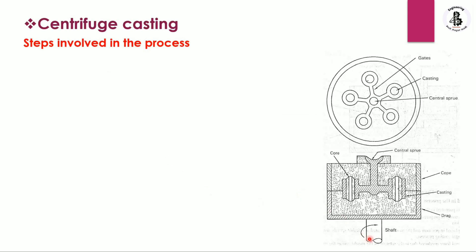The various steps involving the centrifugal casting process: the traditional approach uses a shaft with cope, drag, and parting line. If you want to make hollow shapes in the casting, you should use core materials. This is our central sprue. All the molten metal is poured onto the top, and with the help of centrifugal force it fills inside the mold cavity.